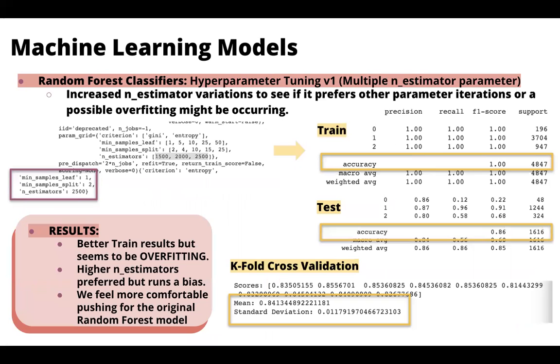So for this next version, we wanted to see if an increase in estimators would affect our results. So we plugged in our parameter grid, 1500, 2000 and 2500 estimators. This gave us the highest number of estimators to be the most optimal, with our accuracy rates still at a hundred percent and the test at 86 percent. And with K-fold cross-validation, we found that the test accuracy average is at 84 percent deviating by around one percent again. So we were kind of iffy about this model because hyperparameter tuning can result to overfitting. We felt more comfortable pushing forward with our original random forest.